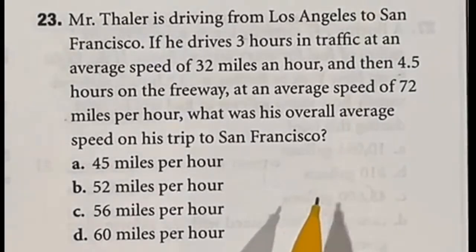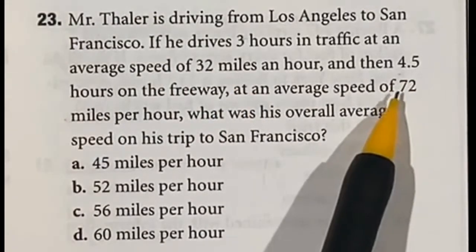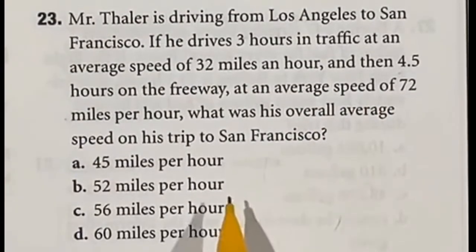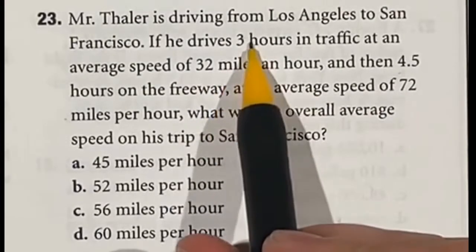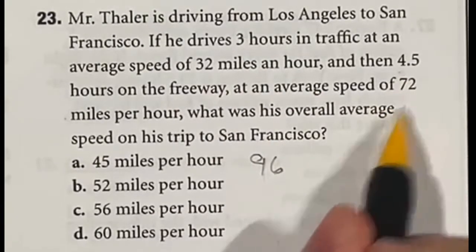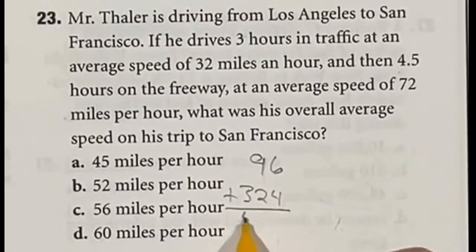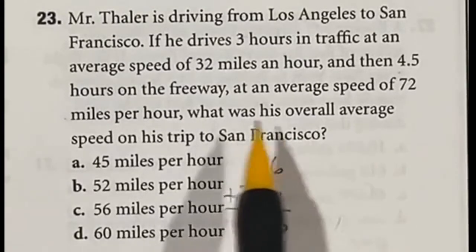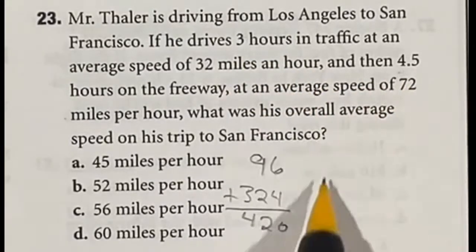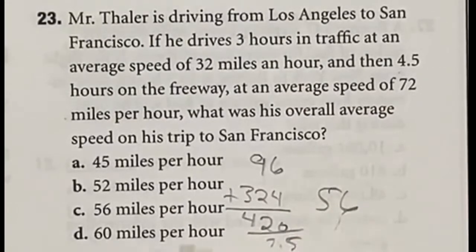Question 23 is really just a measure of how quick you are with mental math. They're driving for 3 hours at 32 miles per hour and then 4.5 hours at 72 miles per hour, and they want to know the overall average speed for the trip. I need to first find our total mileage. 3 times 32 gives me 96. 4.5 times 72 gives me 324. Adding those together gives me 420, which is our total distance traveled. Dividing by total time: 3 plus 4.5 is 7.5, so 420 divided by 7.5 ends up being 56, which is C.